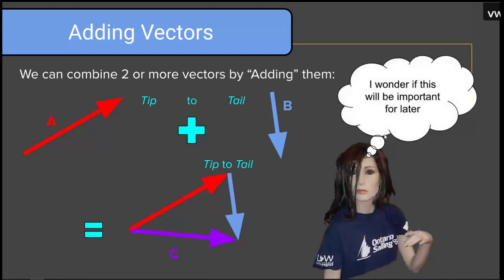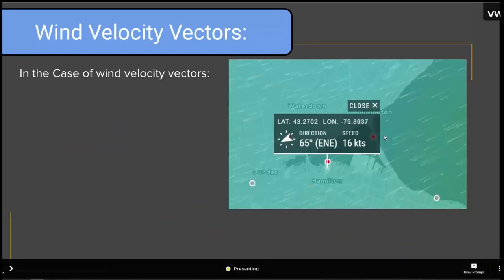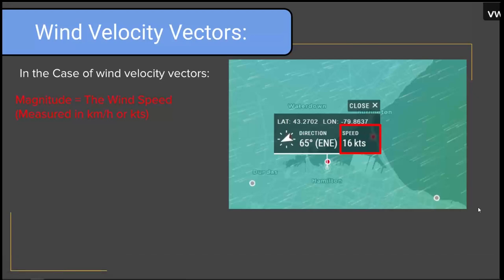In the case of wind velocity vectors, the magnitude of the velocity vector comes from the wind speed, measured in kilometers per hour or in knots — on land usually kilometers, on water usually knots. The direction of the velocity vector arrow comes from the direction that the wind is blowing.